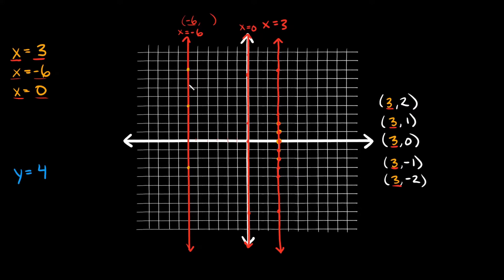I know it might be a little counterintuitive — your x-axis is horizontal, but when you graph x is equal to a number, the line is vertical. A more intuitive way to think about it: if you had x is equal to 3, you can just draw the x number line horizontally. With 0 in the middle, 10 on the right, and negative 10 on the left — 3 would be somewhere around here on that number line.